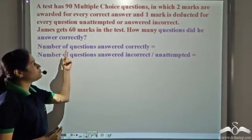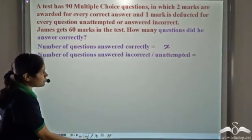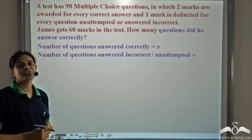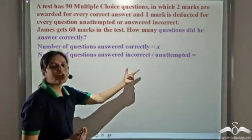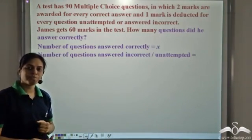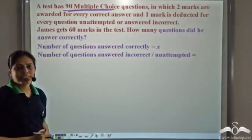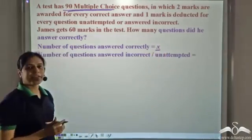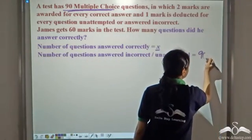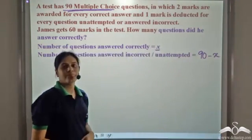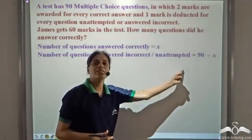Let us assume that the number of questions answered correctly is x. If James answers x questions correctly, how many questions will be answered incorrect or unattempted? Whatever is left. The test has 90 questions, out of which x have been answered correctly, so we are left with 90 minus x. So the number of questions answered incorrect or unattempted is 90 minus x.